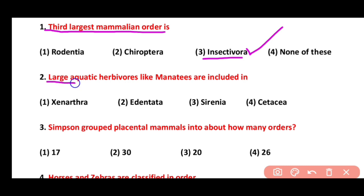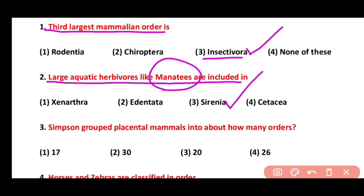Question 2. Largest aquatic herbivores like manatees are included in which order? Sirenia, Edentata, Sirenia, or Cetacea. Correct answer is option 3. Manatees and dugongs are herbivorous mammals and they are included in order Sirenia.